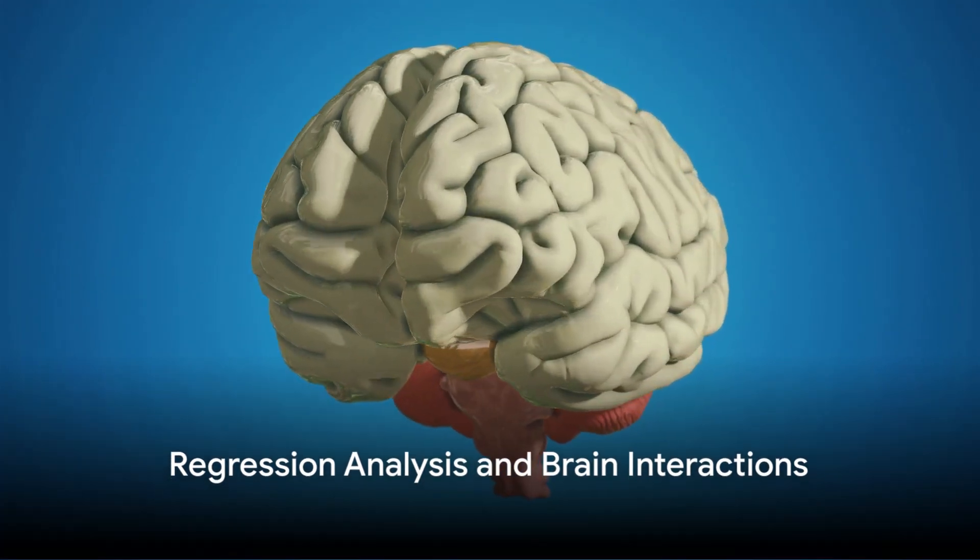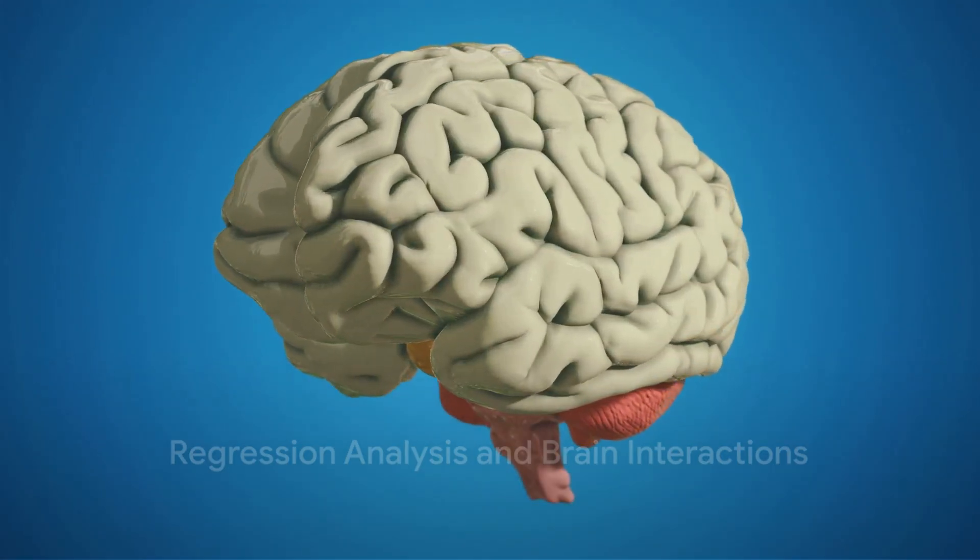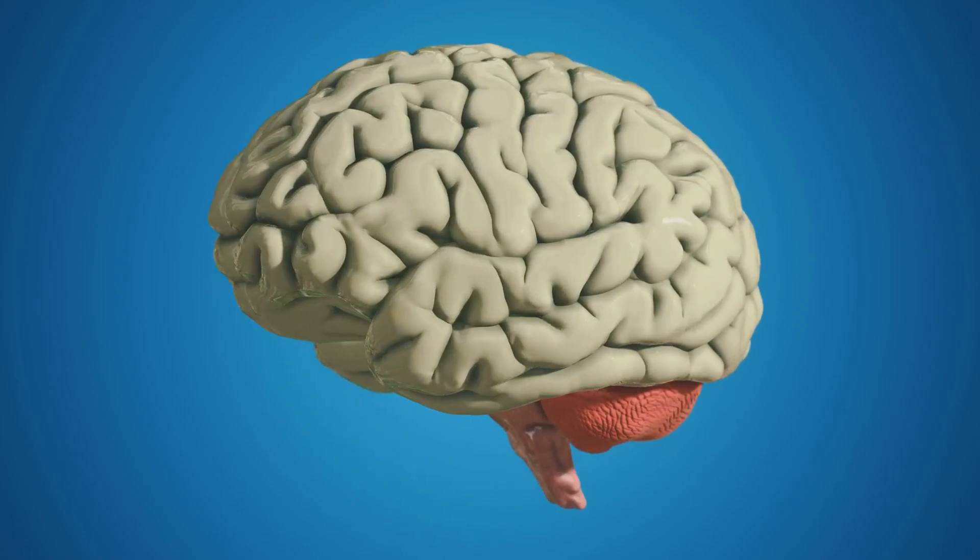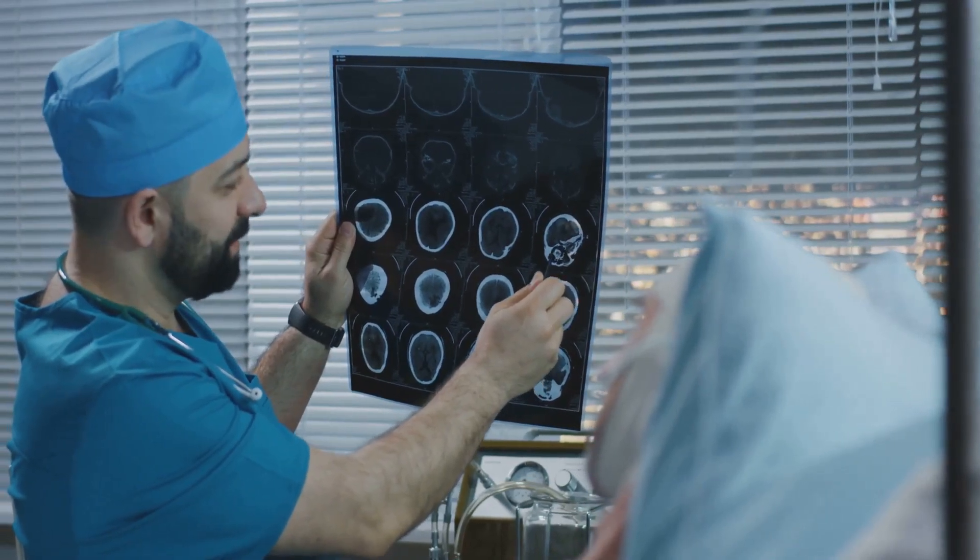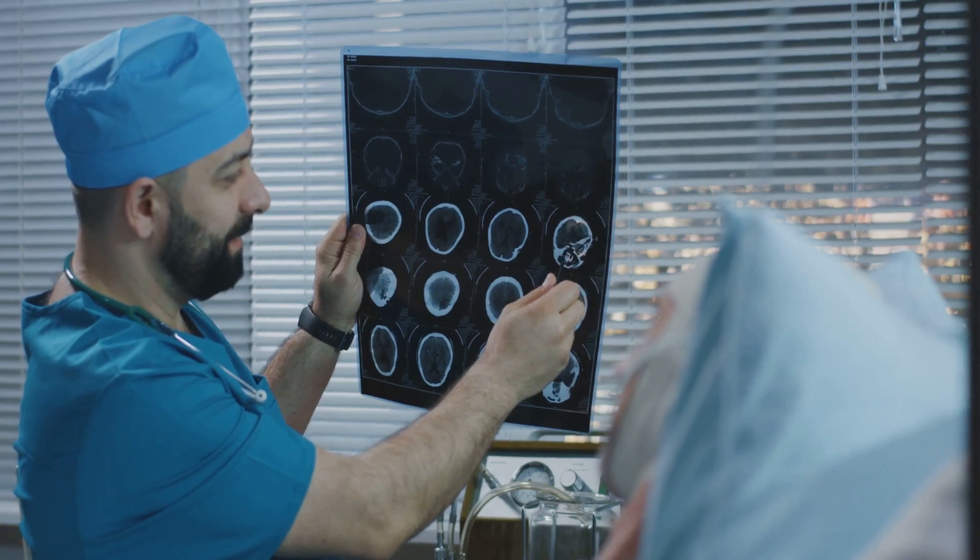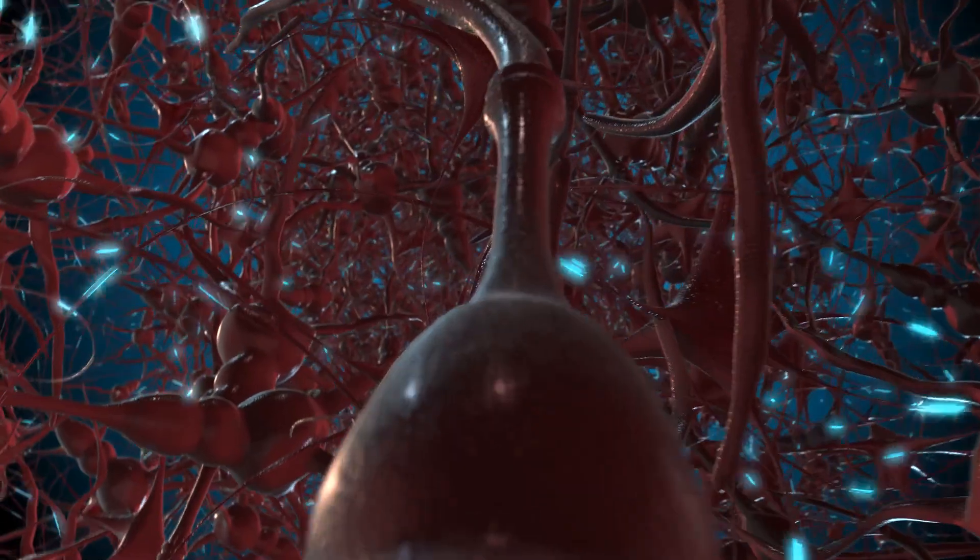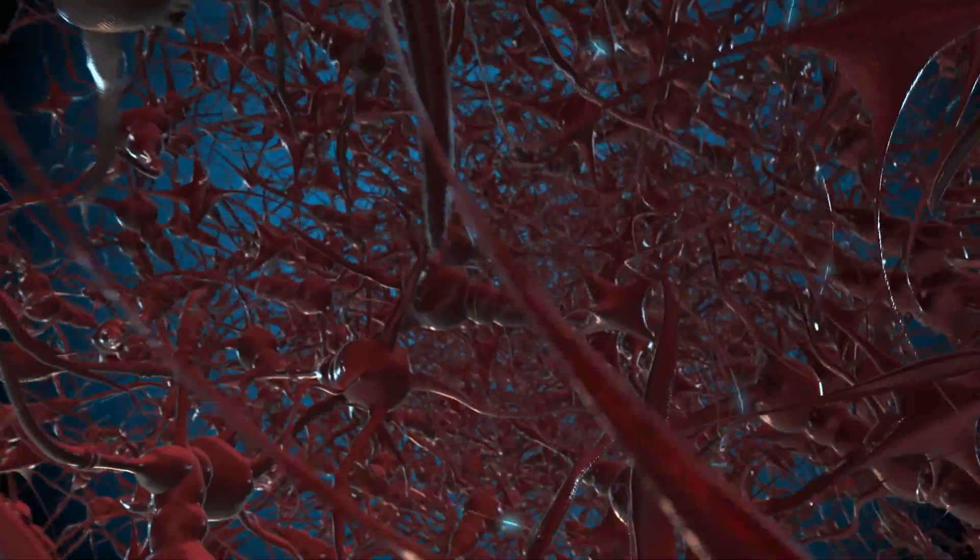Take for instance the concept of regression analysis, a statistical tool used to understand the relationship between variables. When applied to neuroscience, it can help us understand how different parts of the brain interact with each other, and how these interactions may change in response to different stimuli.